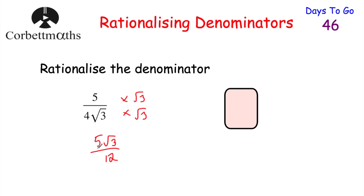Root 3 times root 3 is 3, and then we've got 4 times 3, which is 12, so the denominator is just 12. So for 5 over 4√3, multiplying both numerator and denominator by root 3 gives 5√3 over 12, and the denominator is now rational.